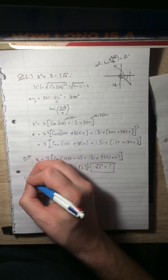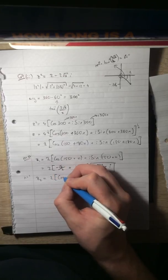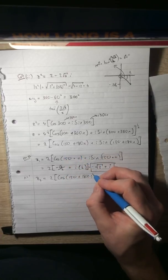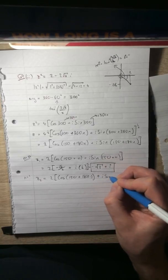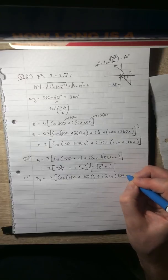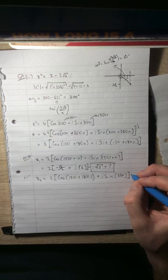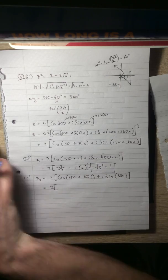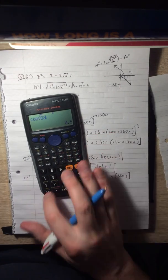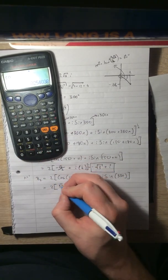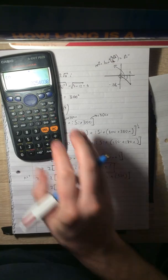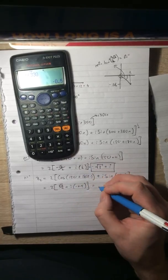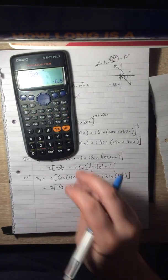And the other possible root, z₂, is when n equals 1. 2 cos(150 + 180) + i sine 330. Well, that's going to be 2 times cos 330, √3/2, plus i times sine of 330, -1/2. And that's going to be √3 - i when you multiply it through by 2.